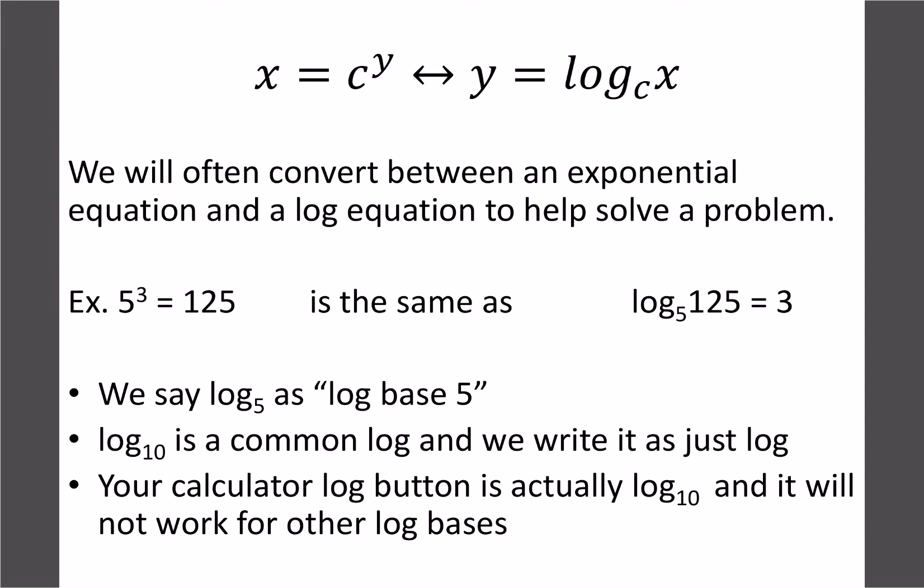If we look at 5 to the 3 equals 125, we'd write that as log base 5, so the base number stays the same and then we crisscross. The 125 goes on that side and the 3 would go on the other, so log base 5 of 125 equals 3. This is the exact same thing as 5 cubed equals 125. What you're basically saying is the base number 5 to the what equals 125, and it would be 3.